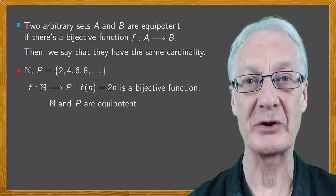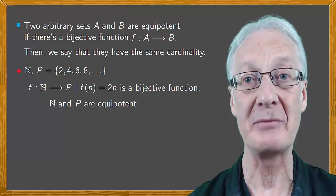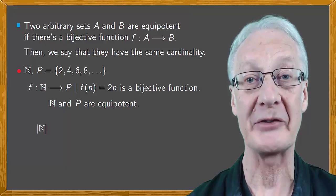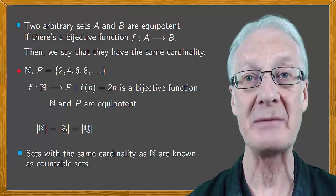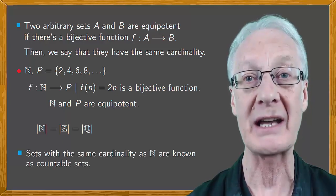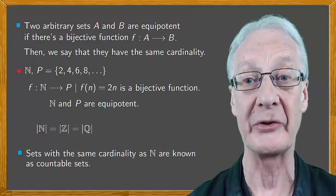It's also strange but true that there are the same number of natural numbers as there are integers and rational numbers. Sets with the same cardinality as N are known as countable sets, so N, Z and Q are all countable sets.